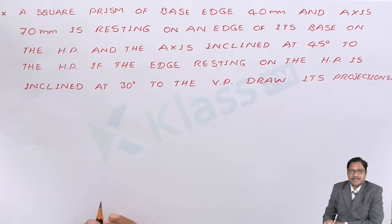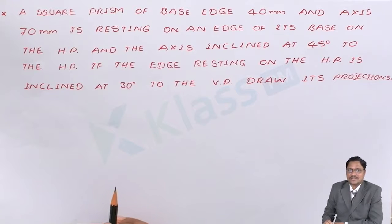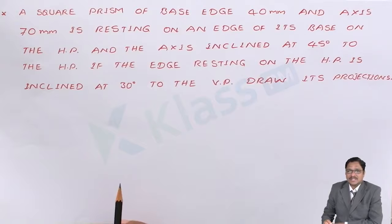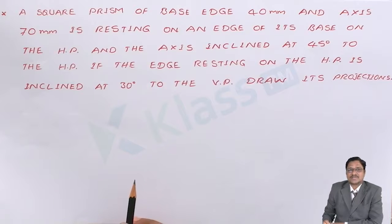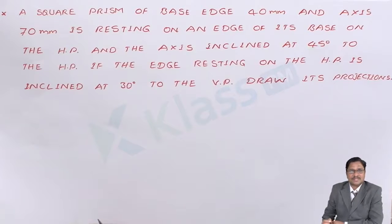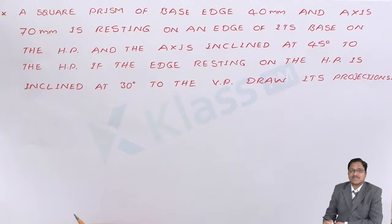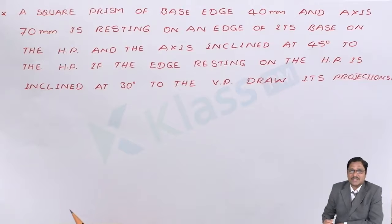Now we will discuss the problems related to axis inclined to both the planes. So far all the problems we have discussed involved the axis inclined to one plane, either resting with HP or resting with VP. So now, as a little extension, instead of one plane inclination, let me discuss the problems related to inclination with respect to HP as well as VP.